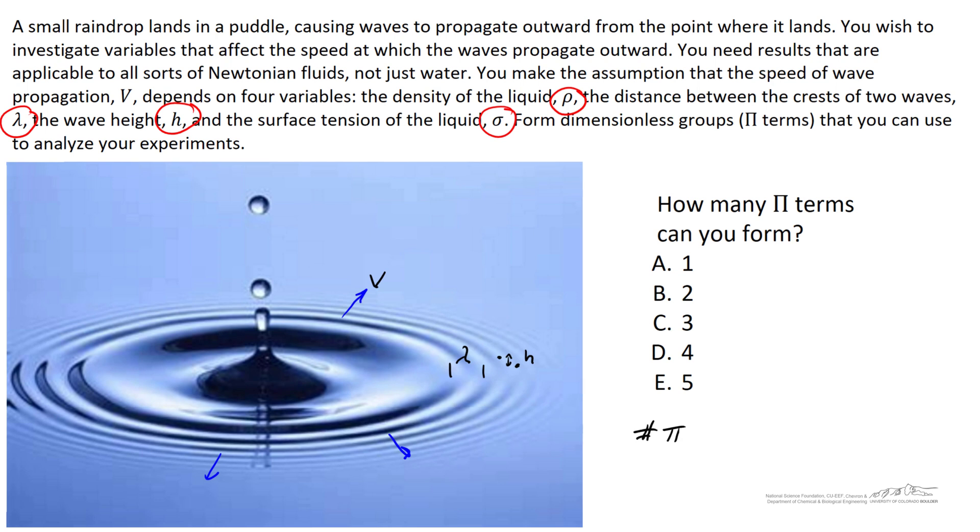So to figure that out, we'll say the number of pi terms is equal to k minus r, where k is the number of variables that we're interested in. In this case, k is equal to 5: 1 for velocity, 1 for density, wavelength, wave height, and surface tension.